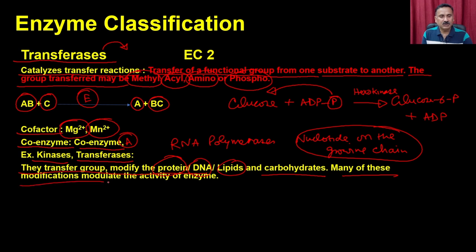Many of these modifications modulate the activity of enzymes. Transferases are a very large group; within them, different enzymes transfer groups onto proteins, DNA, lipids, or carbohydrates, changing the properties of these molecules. For example, phosphorylation can make an enzyme more active or less active — classical examples include pyruvate dehydrogenase and PFK1.